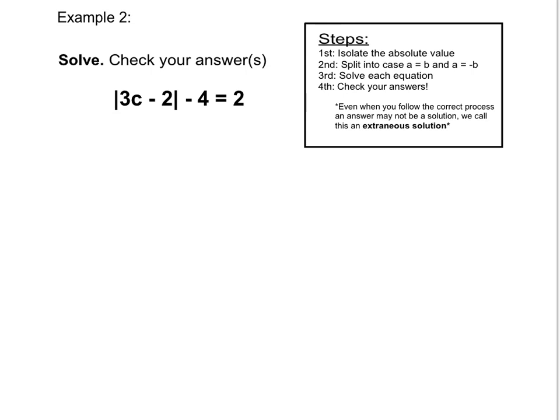Then we split into the cases where the absolute value equals whatever we have on the other side, and our second case where the absolute value equals the negative version of whatever we have on the other side. This is because we know that once we take the absolute value, our distance will be positive. When we solve each of these two cases, we then need to check our solutions, because there could be extraneous solutions, meaning a solution that does not work.